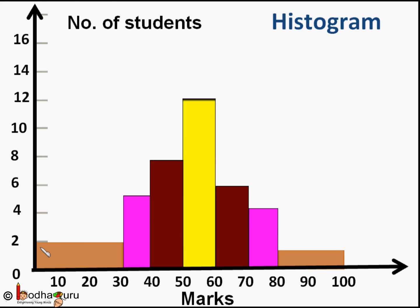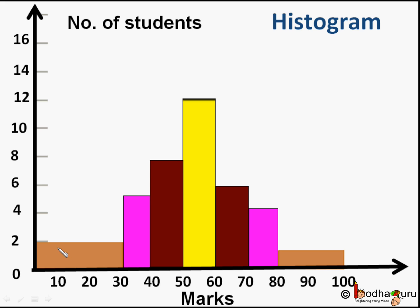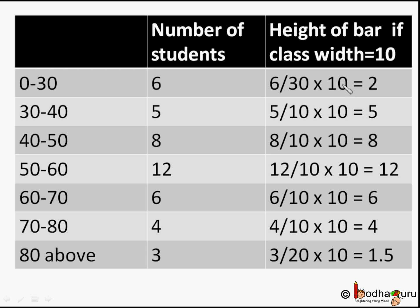So this is how the new histogram will look. Now this graph gives us a proper picture. Remember, the area of rectangles in this histogram is proportional to the frequency. The area of the rectangle of class 0 to 30 is 30 into 2, which equals 60. The area of class 50 to 60 is 10 into 12, which equals 120. The number of students in 0 to 30 class is 6 — half the number in the 50 to 60 class — and its area of 60 is also half of 120. So we normalized the classes 0 to 30 and 80 to 100 so all classes have an equivalent width of 10 — an apple-to-apple comparison.